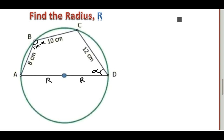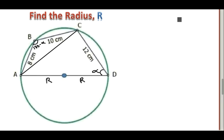That is the first case. The next case — the diameter subtends an angle of 90 degrees at the circumference. Remember our diameter is AD. So if we draw a line from A to C, we are going to have diameter AD subtending an angle of 90 degrees at vertex C.